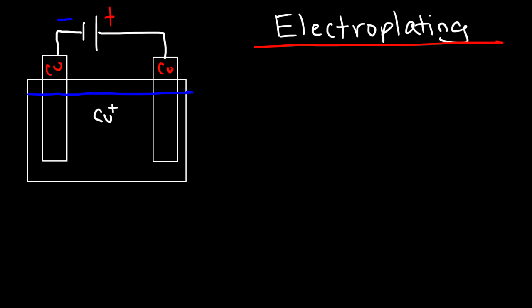And let's say we have nickel ions and zinc ions. Electrons will flow from the anode to the cathode, so electrons will flow towards the positive terminal of the battery and leave the negative terminal of the battery. So on the right side this is the anode, on the left side this is the cathode.